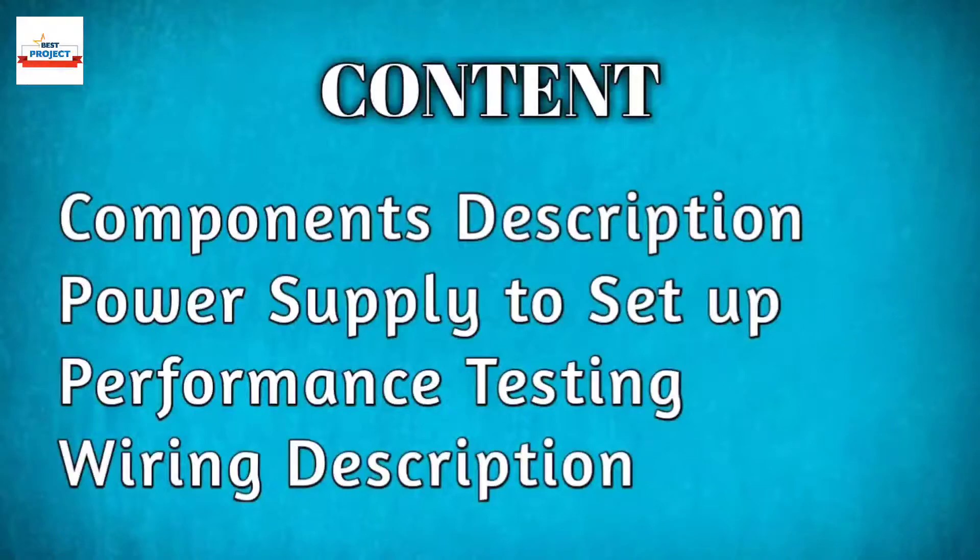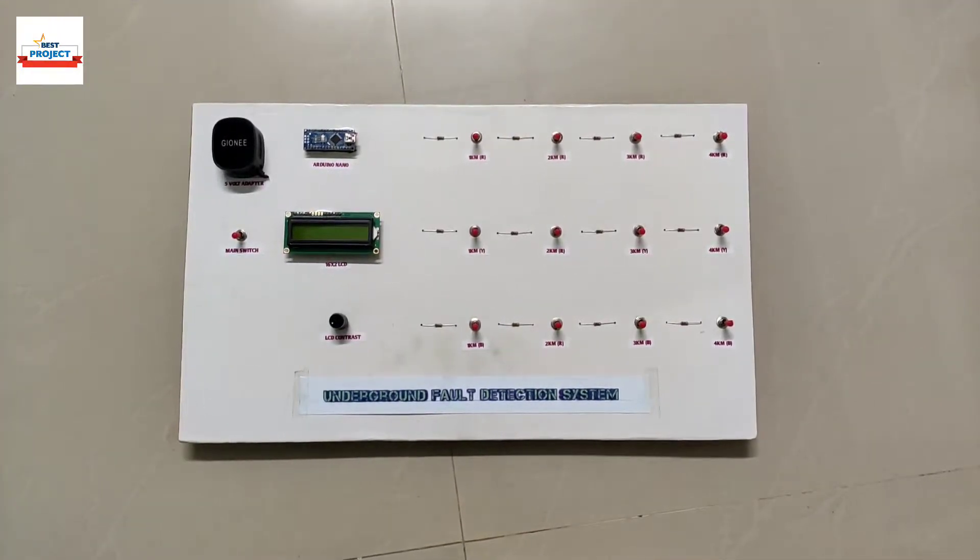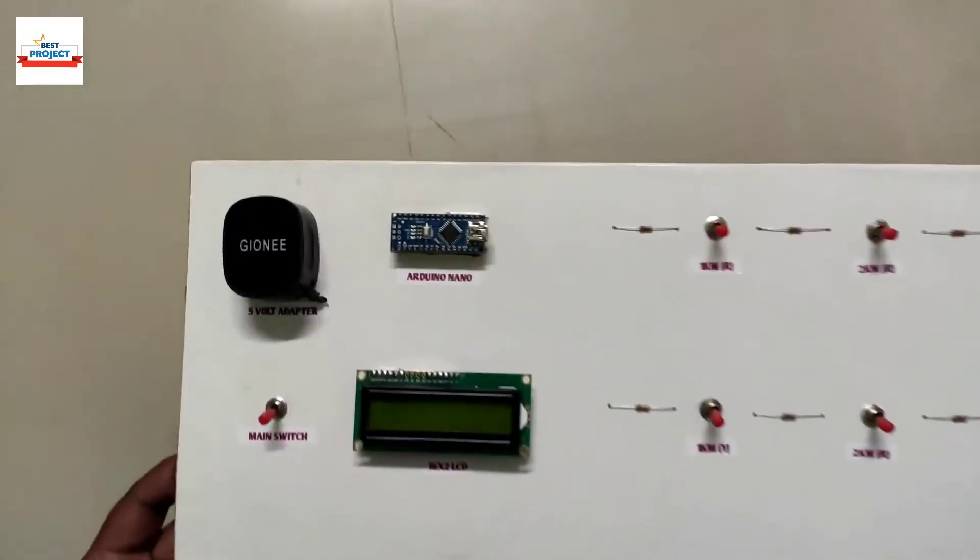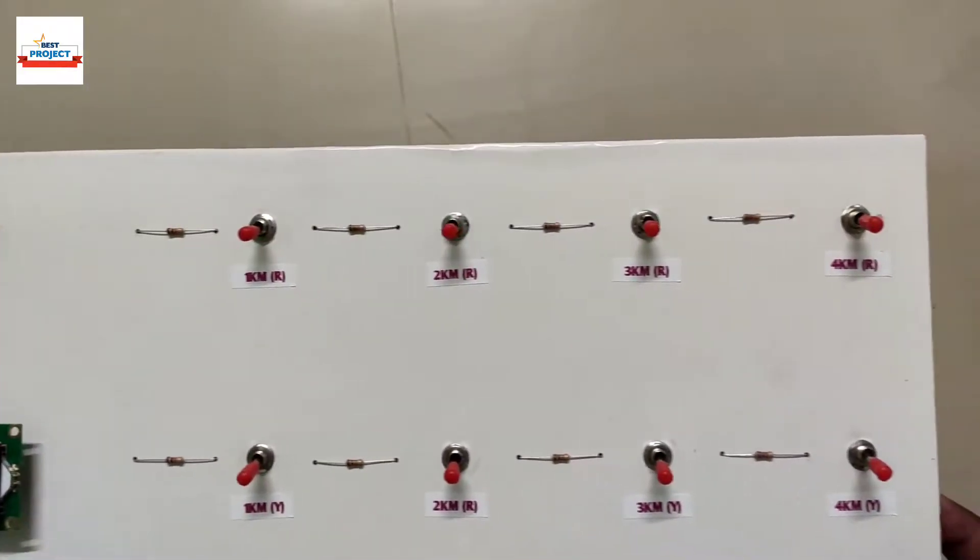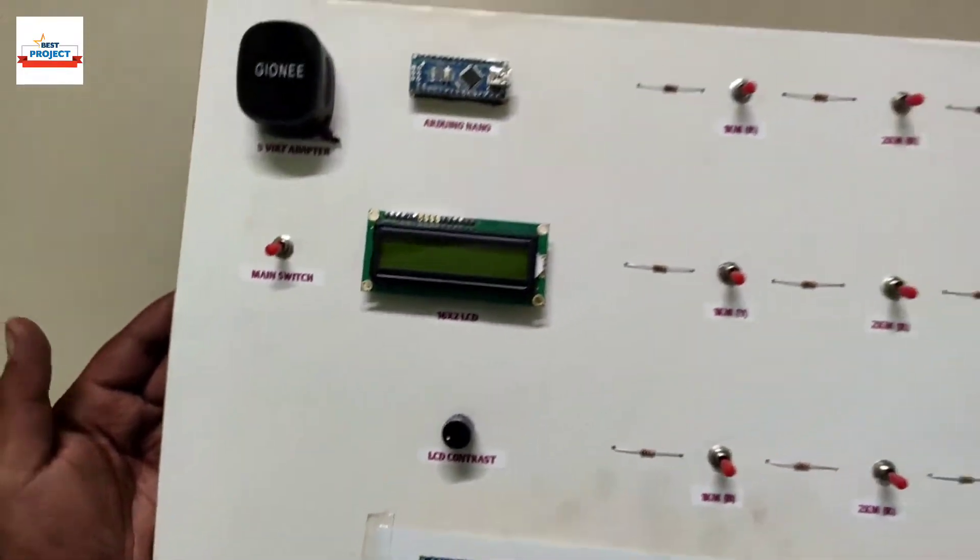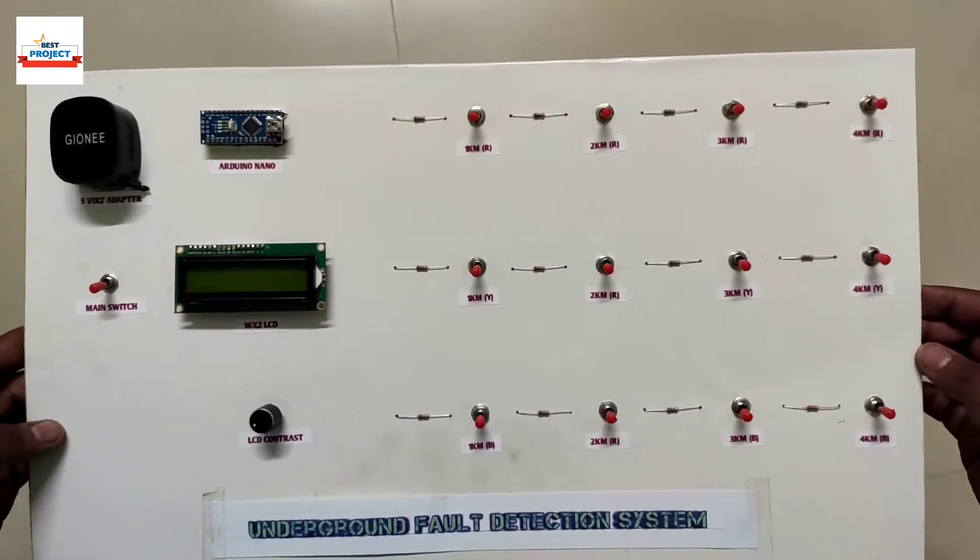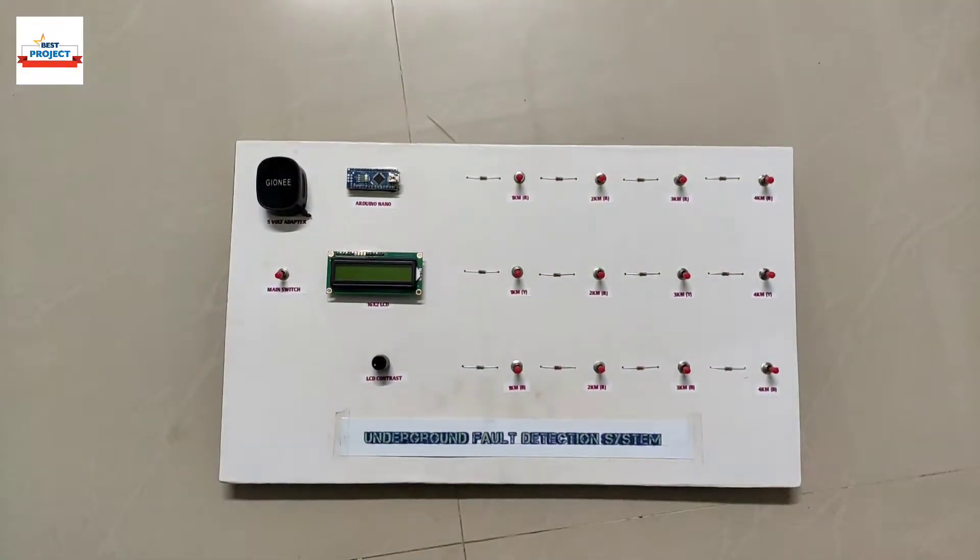We will see all these things in this video. Welcome to our channel Best Project. Today we will discuss the topic underground fault detection system. Underground power lines handle all the power going to the consumer. Sometimes fault occurs and fault detection must be done quickly to avoid loss of consumers. For this purpose, this project is implemented.